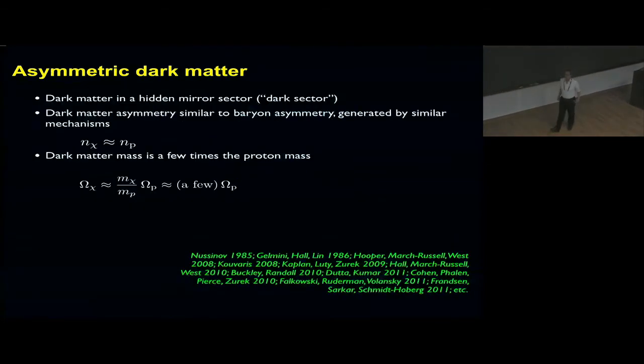Another example is asymmetric dark matter, which is dark matter in a hidden sector, a dark sector. The key here is that there's a dark matter asymmetry generated similarly to the baryon asymmetry. The number density of asymmetric dark matter is comparable to the number density of matter. Because of the mass difference that is imposed on these models, we get the observed ratio between the densities. There's a lot of literature on this.